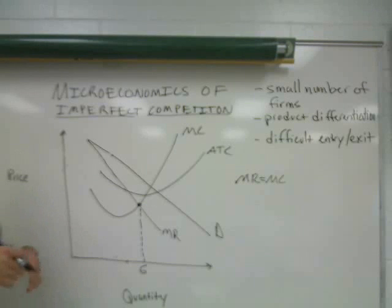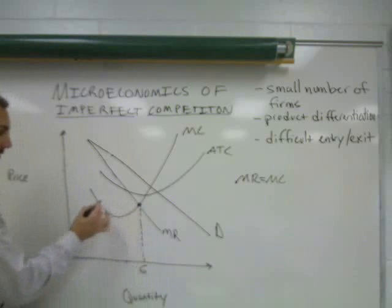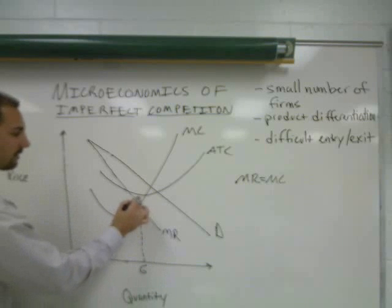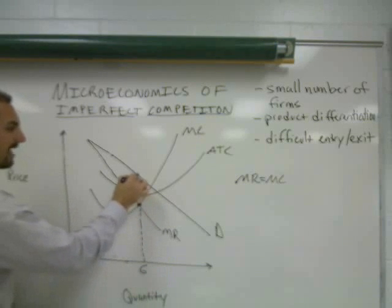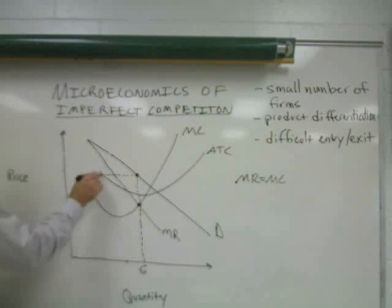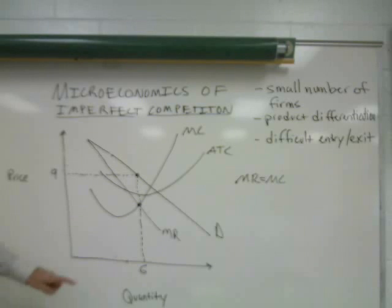Now, to discover what price the profit maximizing firm will charge for these six units, we have to go not across from this point to the price axis, but up to the demand curve. The demand curve tells us what consumers are willing to pay for six units of this particular good. From the demand curve, we then go over to the price axis, and we find that consumers are willing to pay $9 per unit when six units are offered for sale.